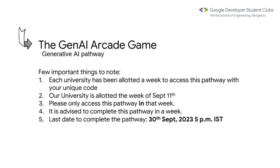Our university is allotted the September 11th week, so you can start on September 11th. If you miss your week, it will close and you won't be able to access this pathway or the arcade game advantage. Even if you have an assignment, exam, or quiz — just take five minutes, put in the access key, start your pathway, and you can always come back and finish it later. There are around five labs and each lab has maybe 10 videos, around 40 minutes each.